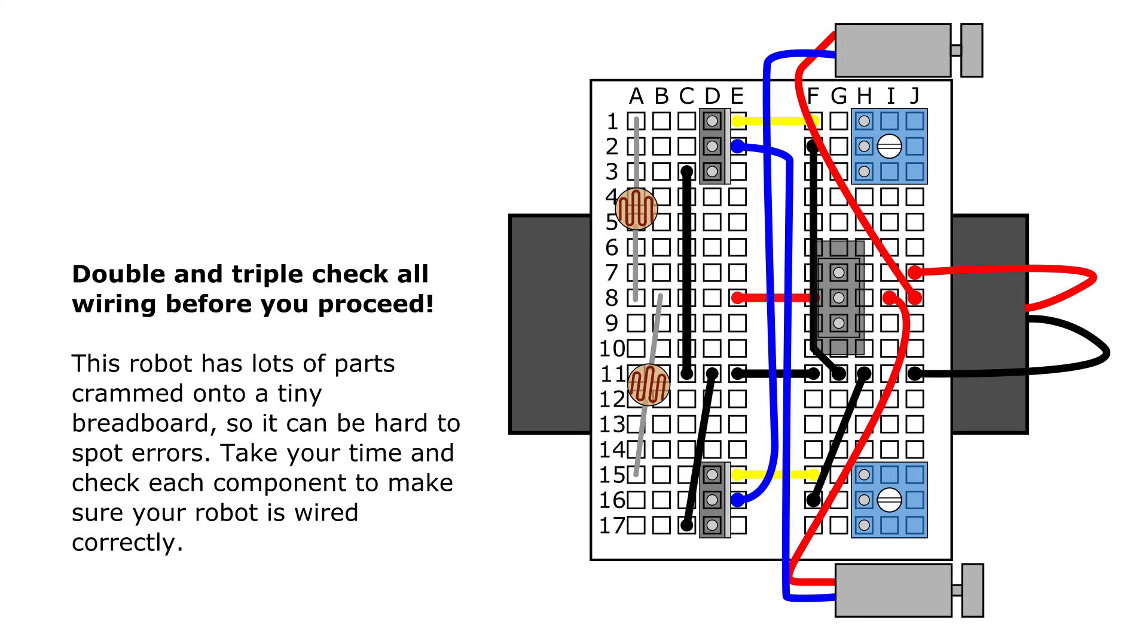So now you should have everything connected. But again, we really want to emphasize double and triple check all of your wiring before you proceed because it only takes one wire being misplaced to prevent the robot from working at all or to cause some strange behavior like the robot always just going in circles and turning in one direction. So especially for students who are new to breadboards and working with tiny breadboards like this that do not have labels on them, it is really easy to just glance at the circuit and everything looks okay. But then when you zoom in and look closely, you can find just one wire that was off by one hole in one location and then that'll prevent the circuit from working.